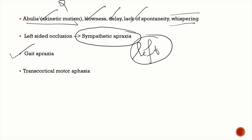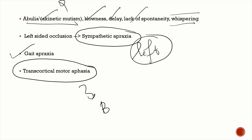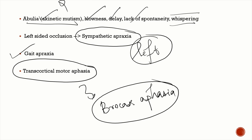The patient can also have gait apraxia — difficulty initiating gait, sometimes presenting as magnetic gait. Additionally, there is transcortical motor aphasia, which is very similar to Broca's aphasia. The patient has decreased speech output with intact comprehension — a non-fluent aphasia. The key difference from Broca's aphasia is that repetition is preserved in transcortical motor aphasia.